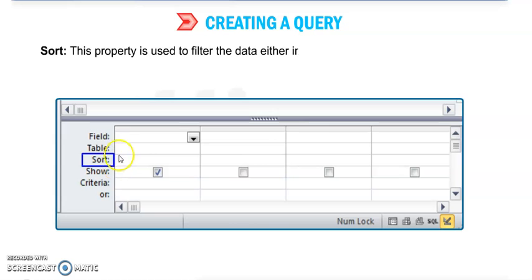Next is Sort. This property is to filter the data either in ascending or descending order. It is an optional property. You want to choose or not, it is optional for you.